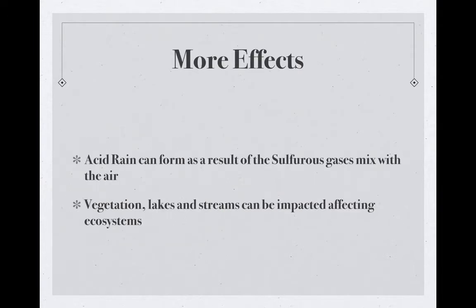More effects: the sulfuric gases given off from a volcanic eruption can interact with water and cause sulfuric acid to form. This can be in the rain and in the clouds — we get acid rain. This can destroy vegetation, get into lakes and streams and affect the pH, cause disruptions in the ecosystem, and also disrupt the pH of soil, further causing disruptions in those ecosystems.